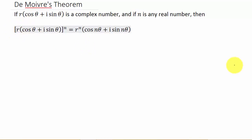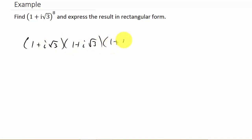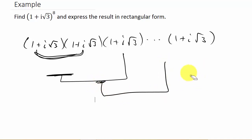Let's look at our example. We have a complex number and we want to raise it to the 8th power. This is where this theorem comes in handy. Think about it — if we wanted to figure out what 1 plus i square root of 3 to the 8th is, we would actually have to multiply all that out. We would have 8 of these to multiply together, getting an answer each time until we multiply them all together.